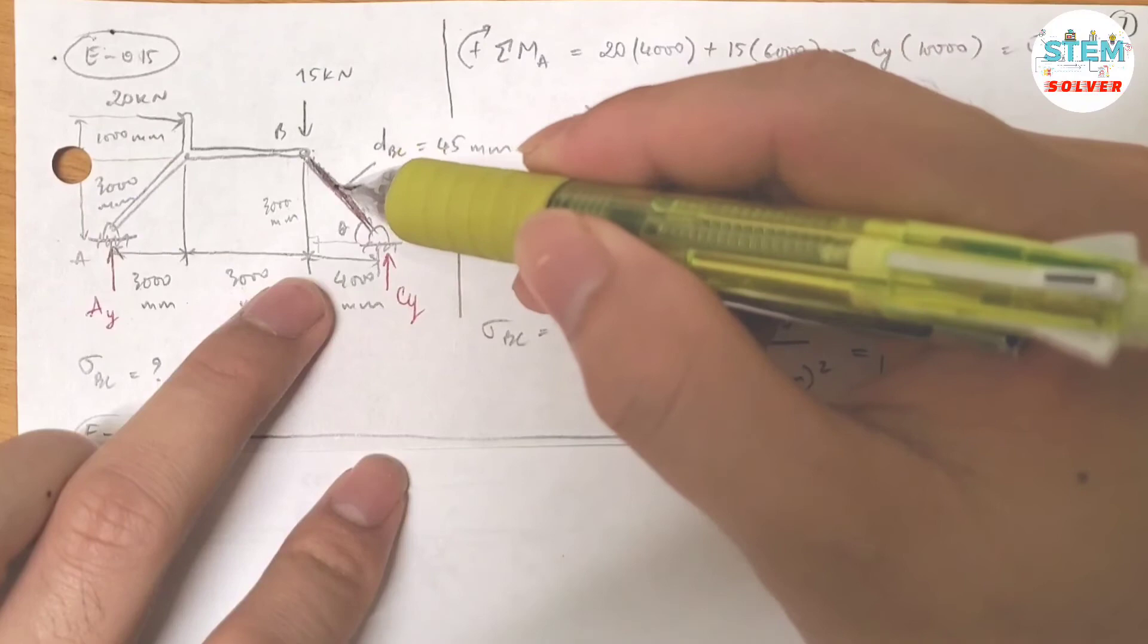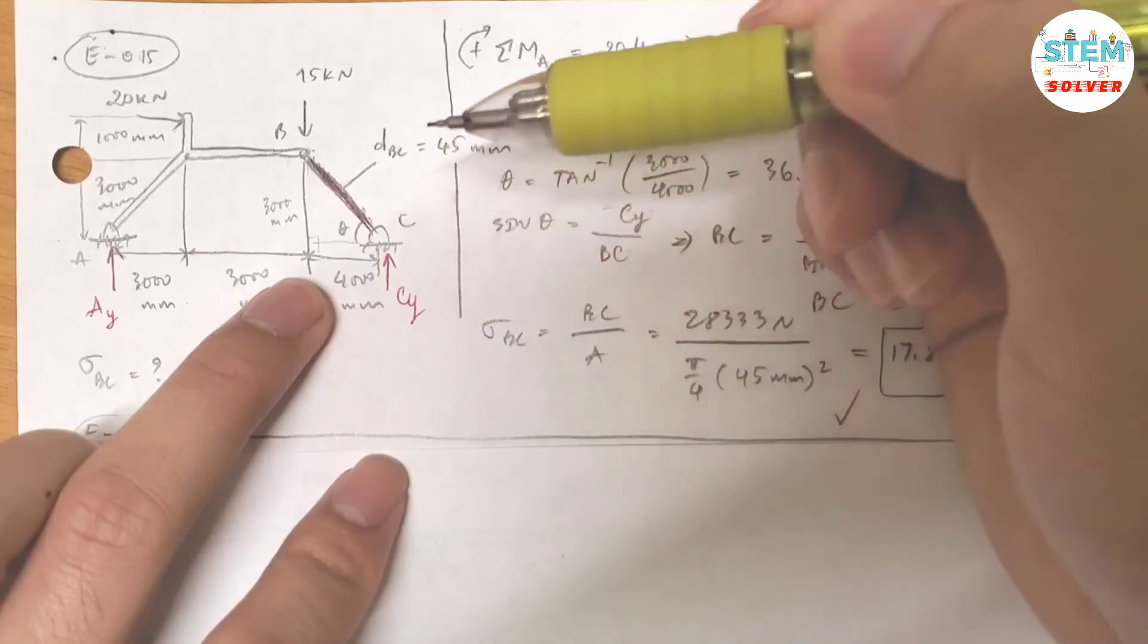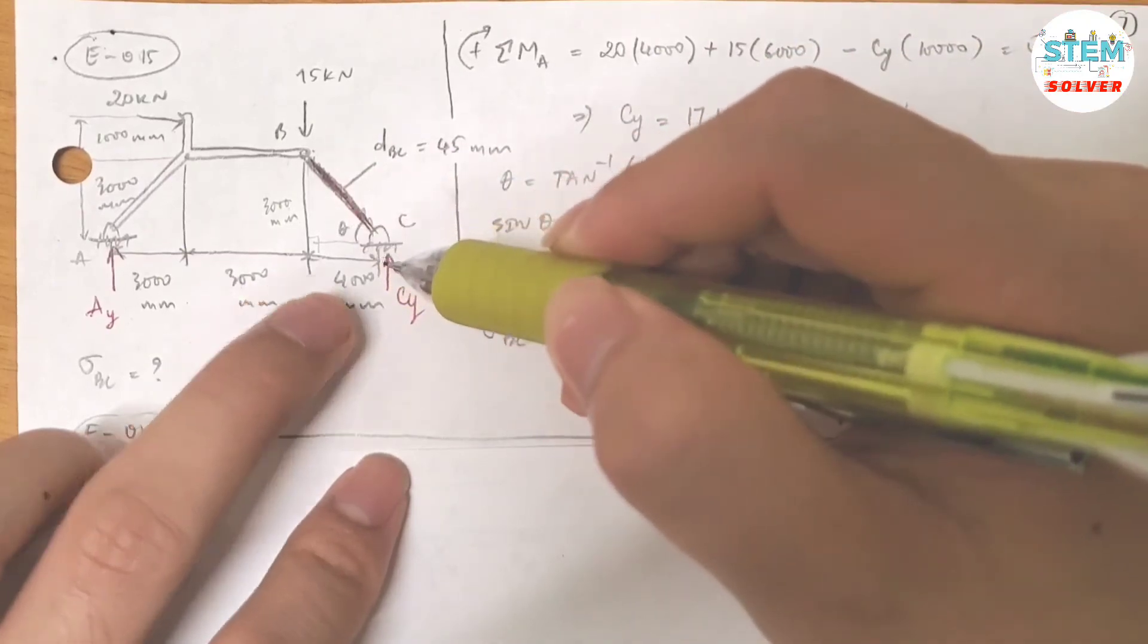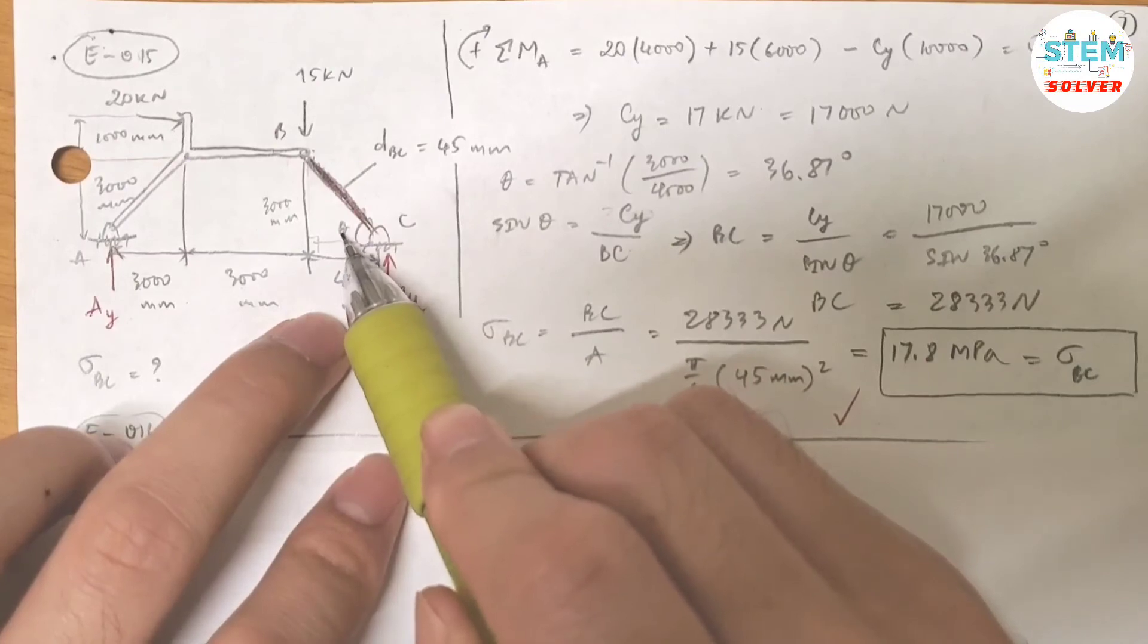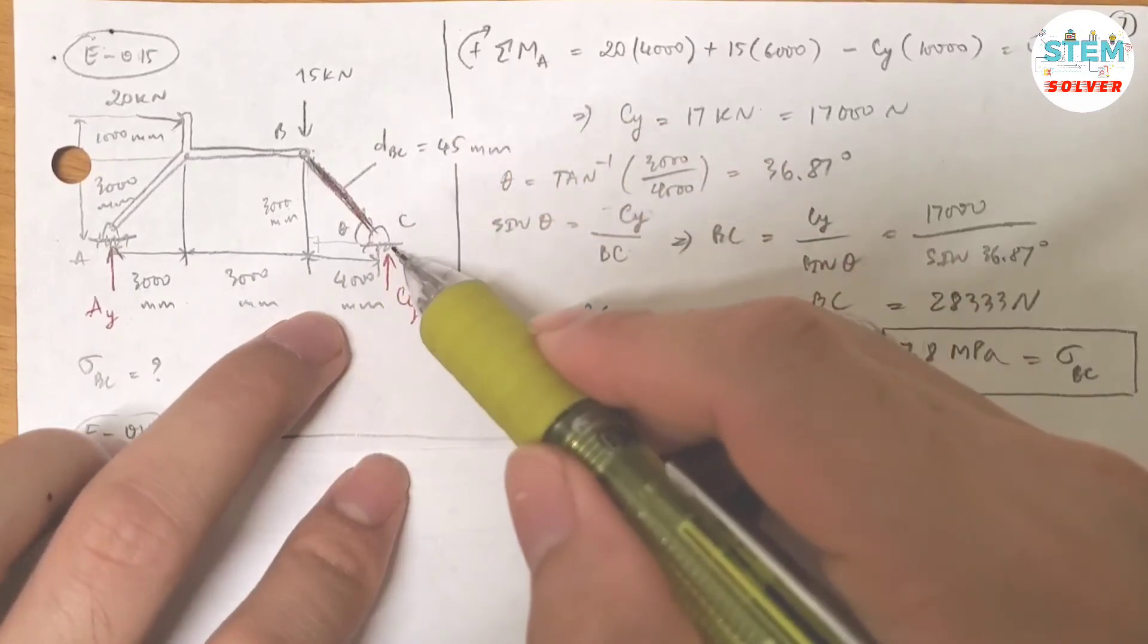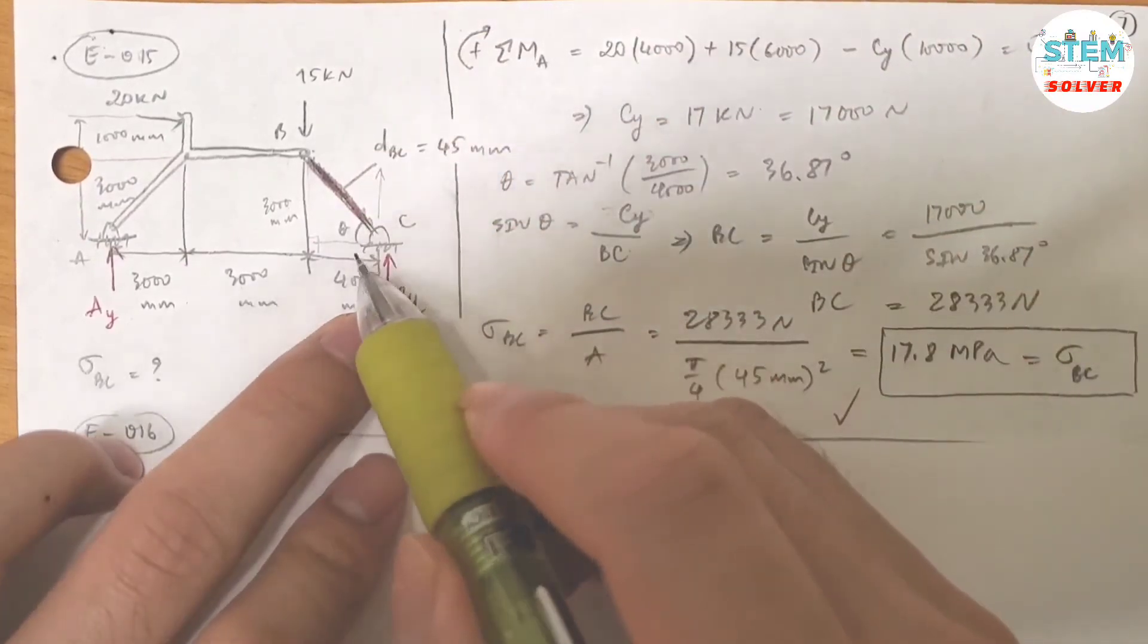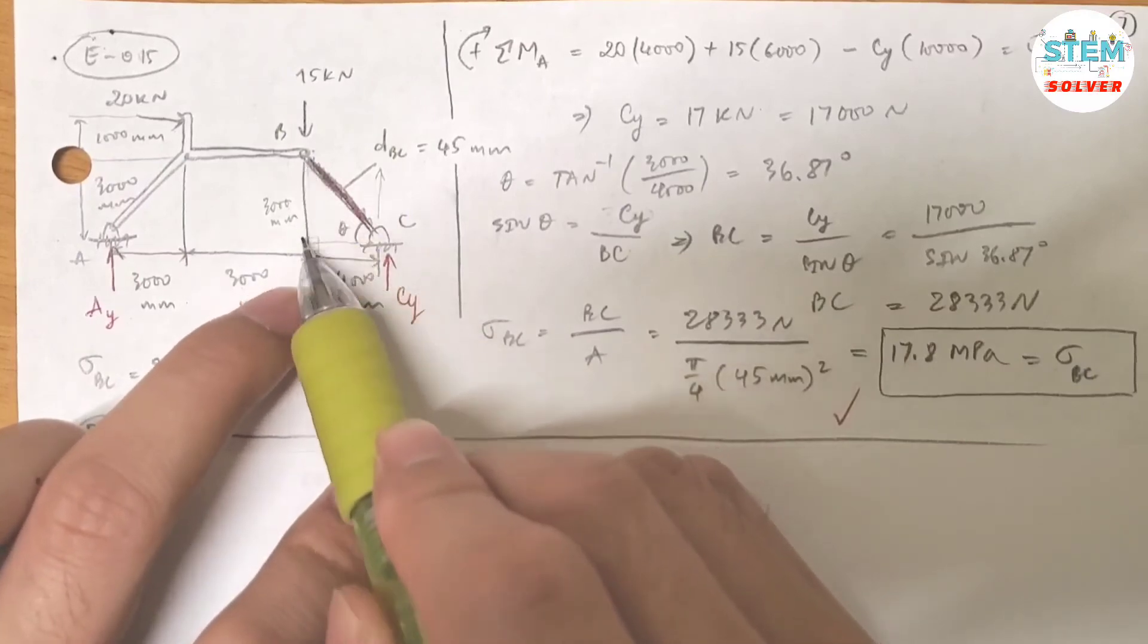Now to find the force in this member, you have Cy. Sine theta equals opposite over hypotenuse, so you have this force pointing up.